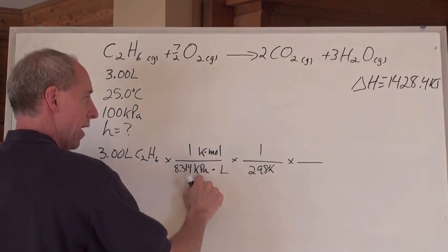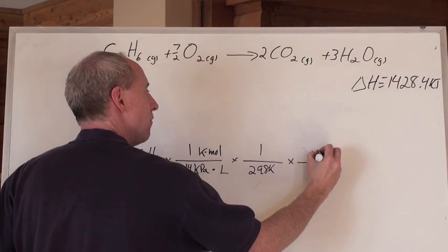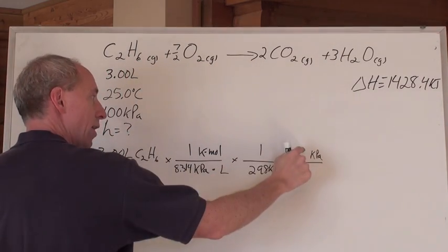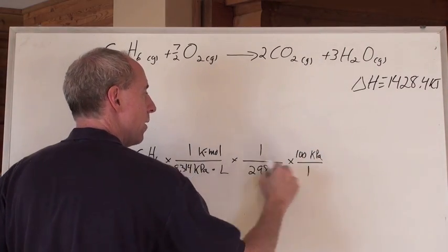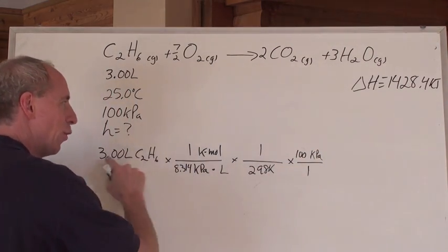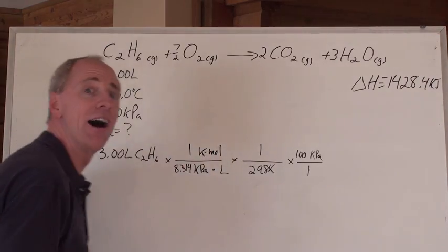Times. Now what do I want to get rid of? KPAs. Which I need to have in the numerator here, because it's in the denominator here. 100 kPAs over 1. Look at that. It's so beautiful. When I cancel out all these units right now, I've got moles.